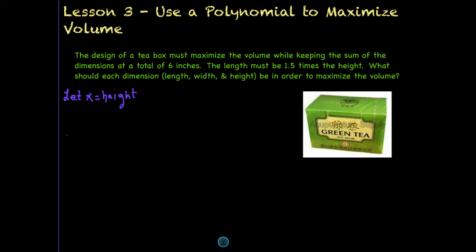So what I've done is I've said let x equal the height, so we need a variable. We don't know the height, so we'll just call the height x. Then let's move on to some things that we do know. We know that the length must be one and a half times the height.